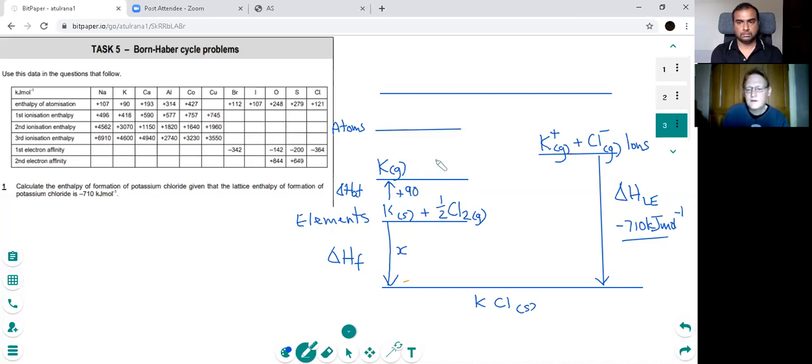So we've still got our chlorine. And then we need to turn the chlorine molecule into a gaseous atom. And that, if we look at the table, atomization of chlorine is plus 121.